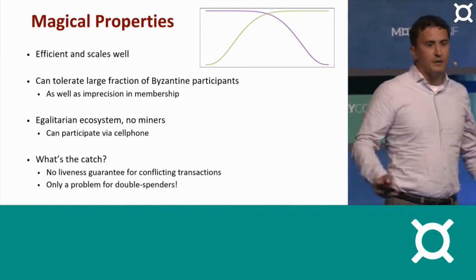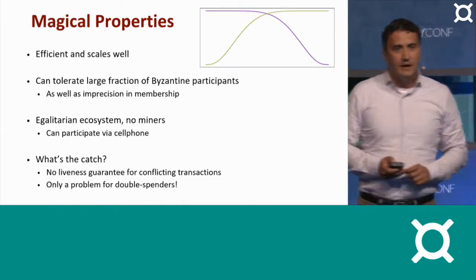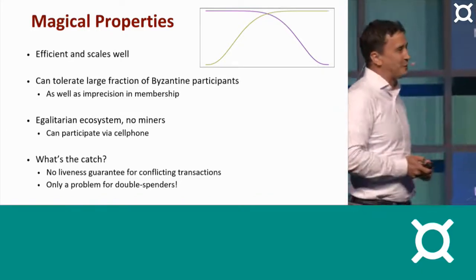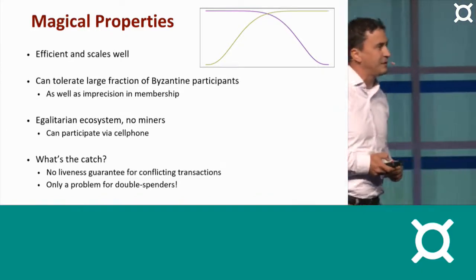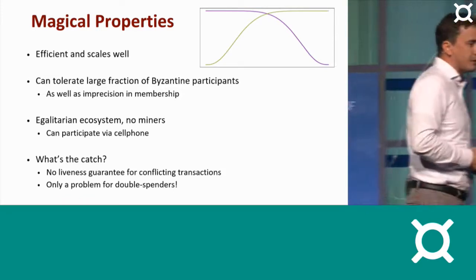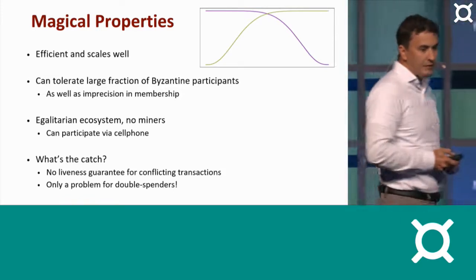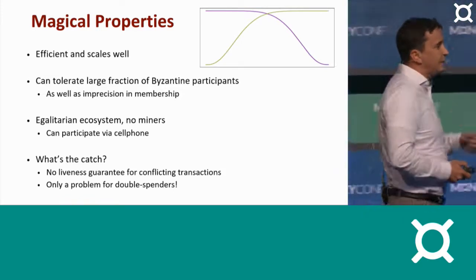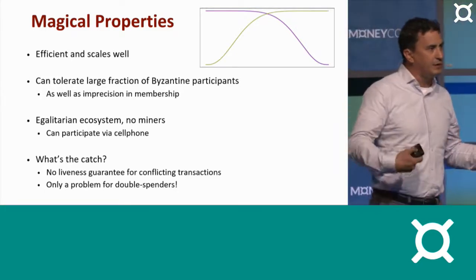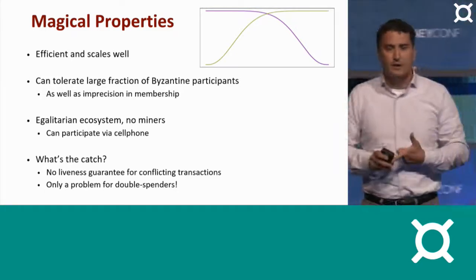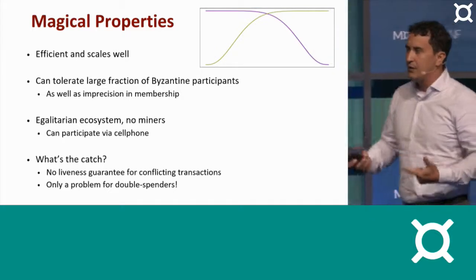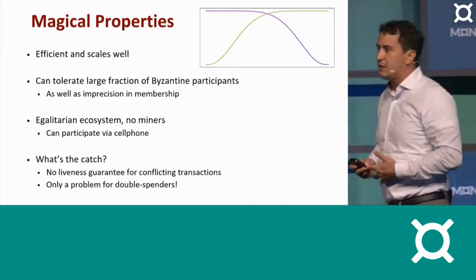That's very, very simple. You did not have to read pages and pages of obscure mathematical proofs to understand the intuition behind why this works. So what does this mean? Well, it means that we have the low latency of this kind of protocol. We have the scalability of this kind of a loose, lightweight mechanism.